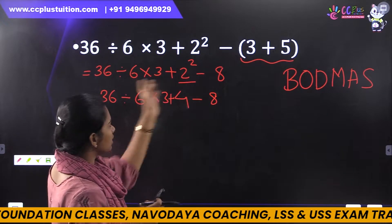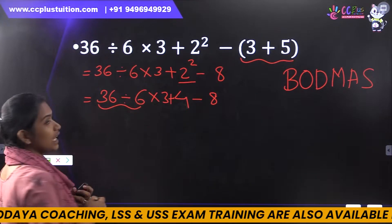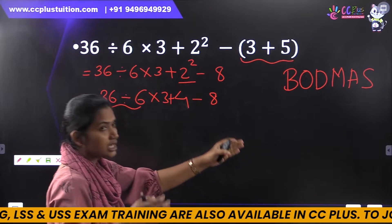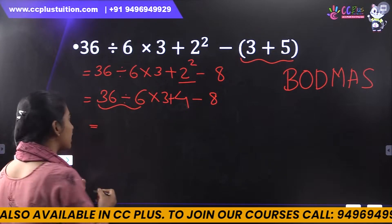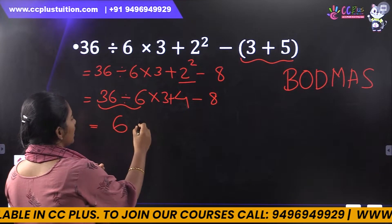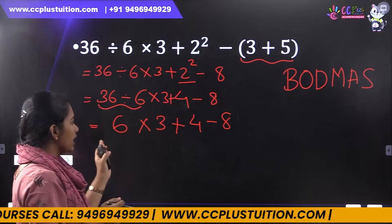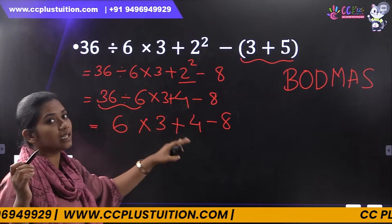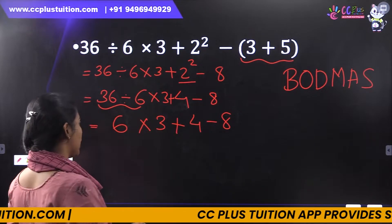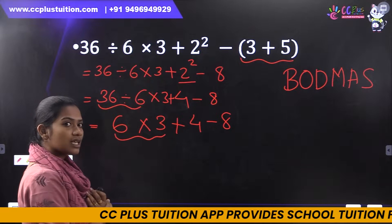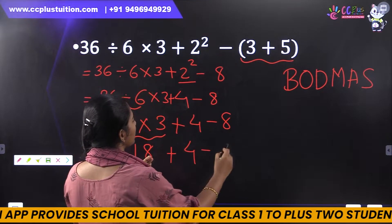Next, we have brackets — no. We have order — no. We have division — yes. We have division. Next, we solve division: 36 divided by 6. That gives 6 into 3 plus 4 minus 8. Let's solve this order. Next, multiplication: 6 into 3. That's 18. So 18 plus 4 minus 8.